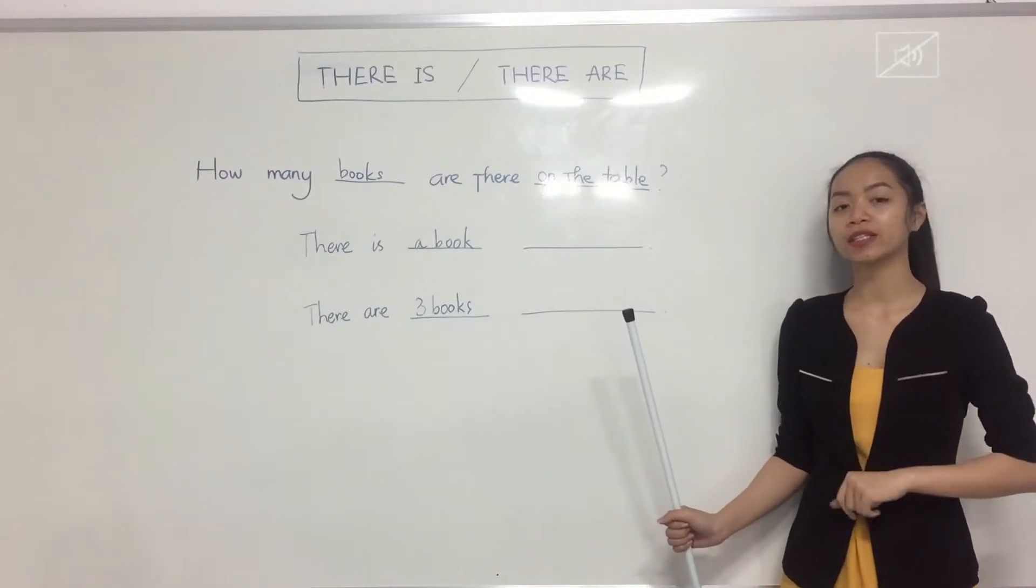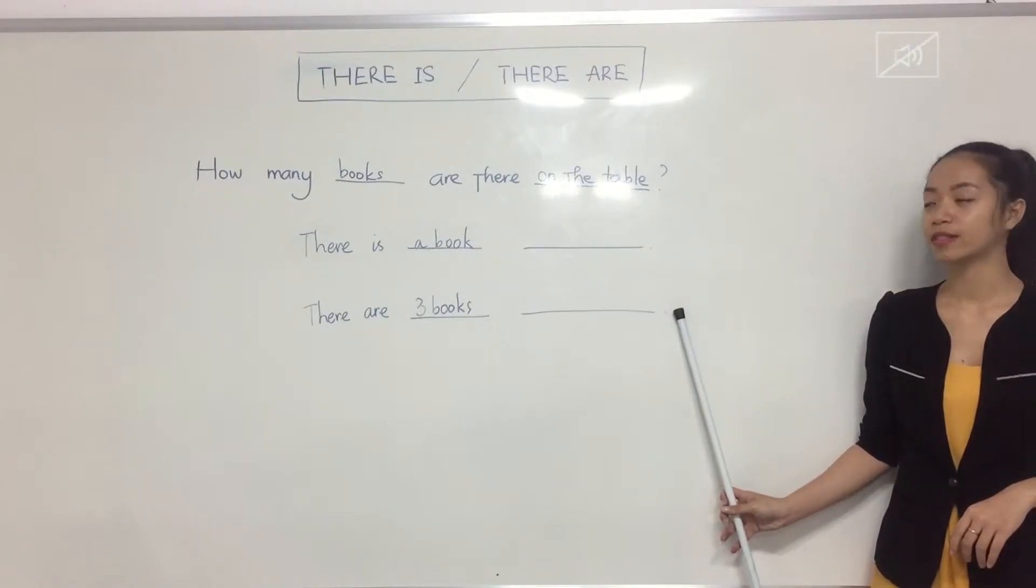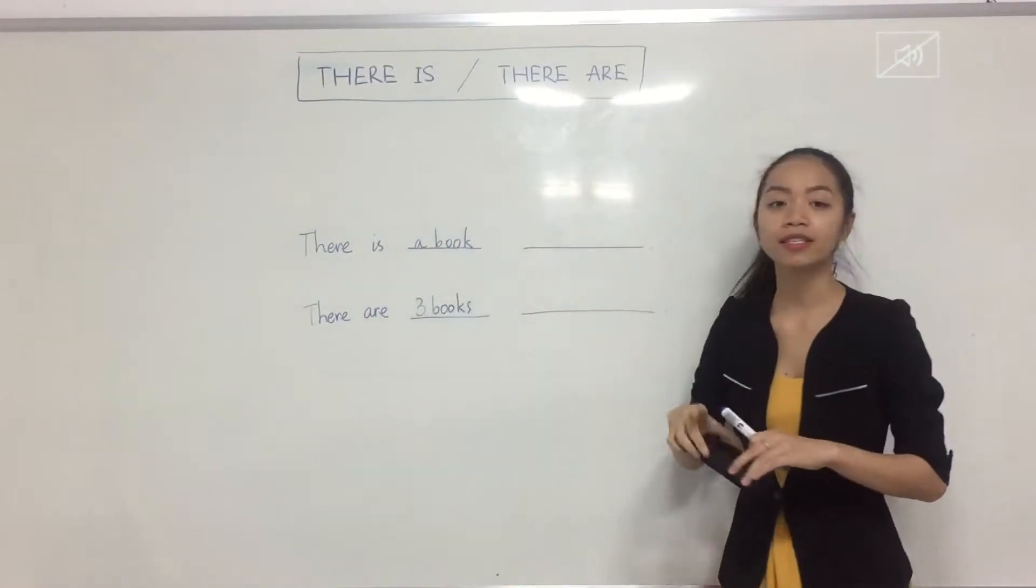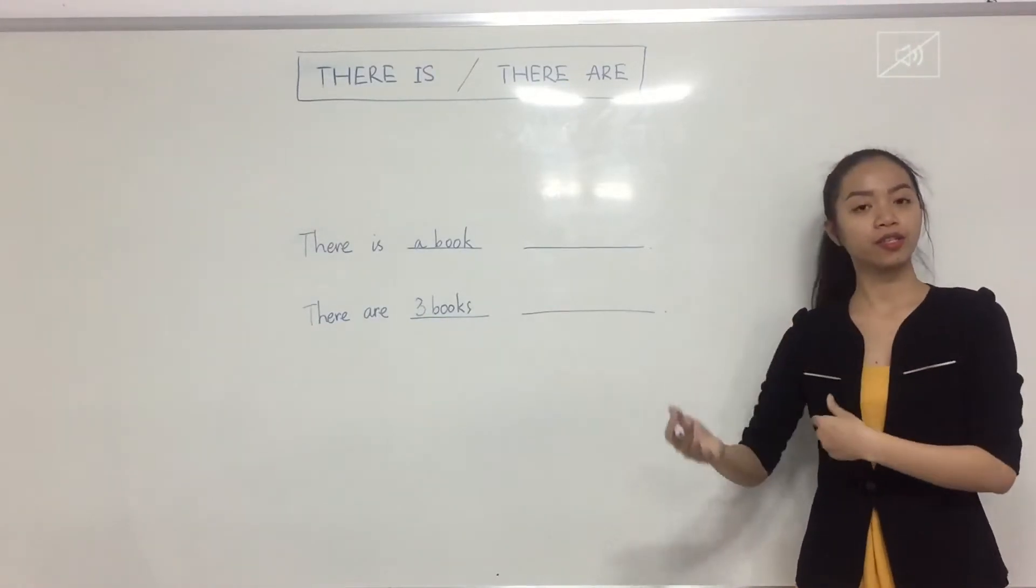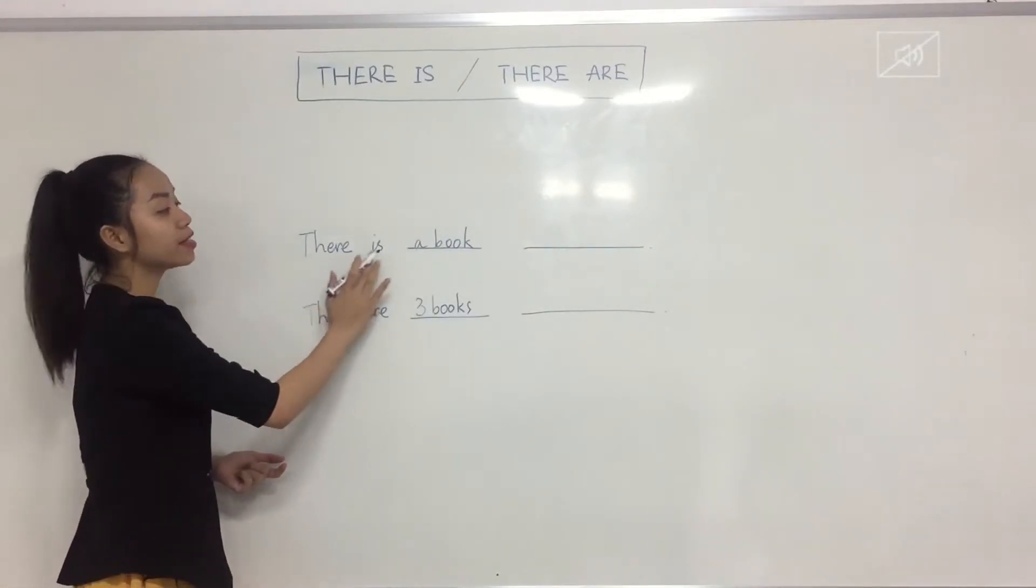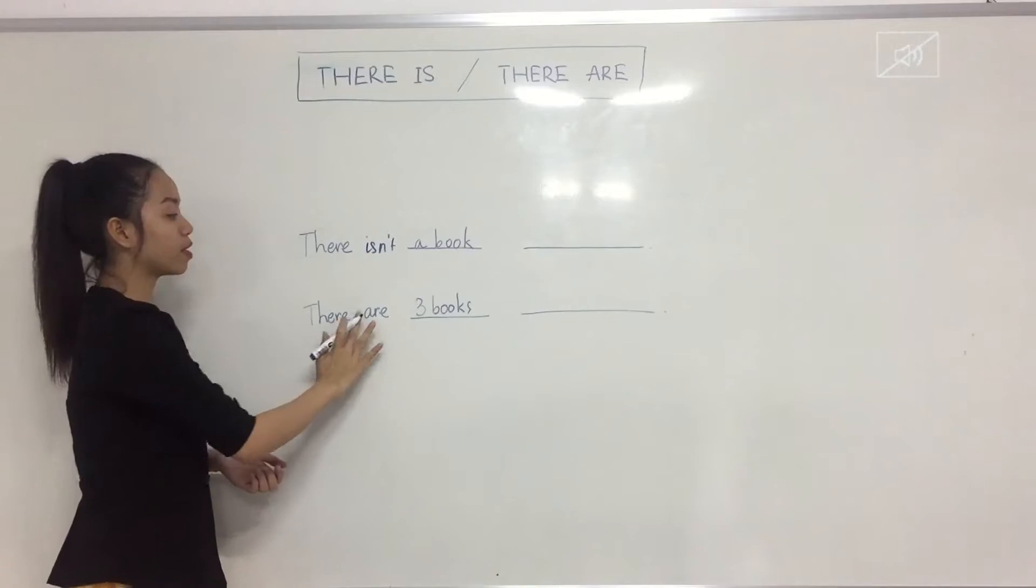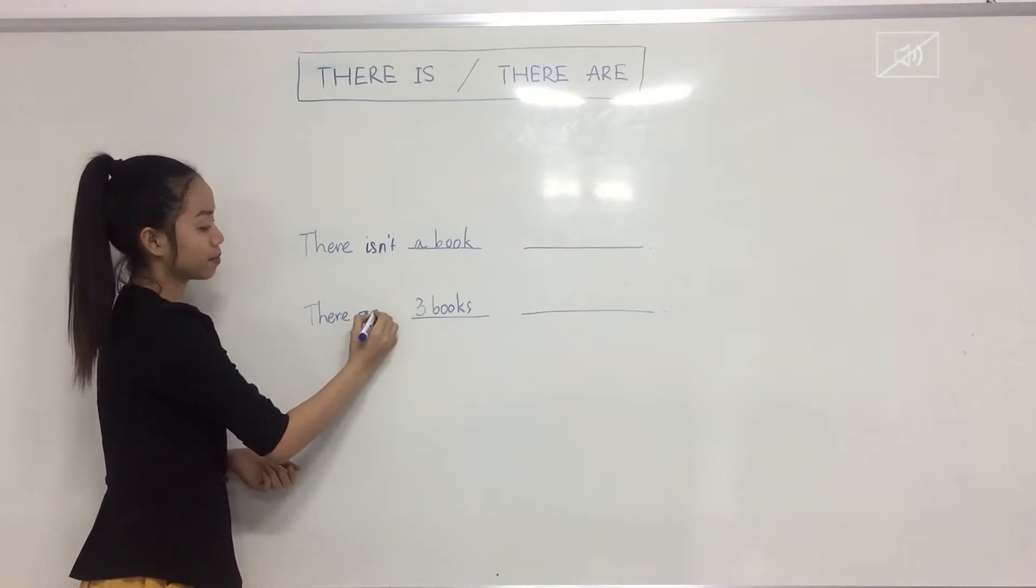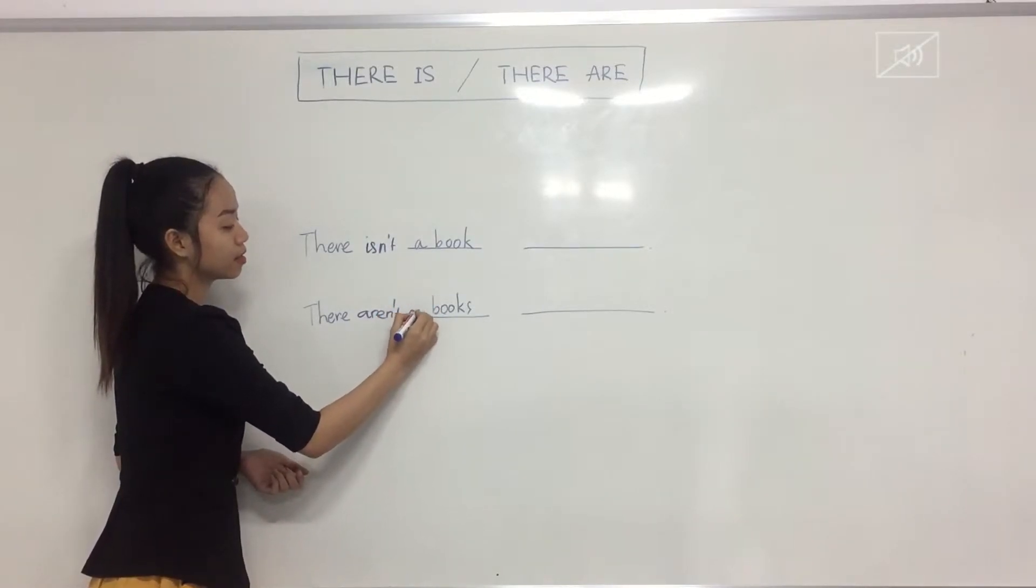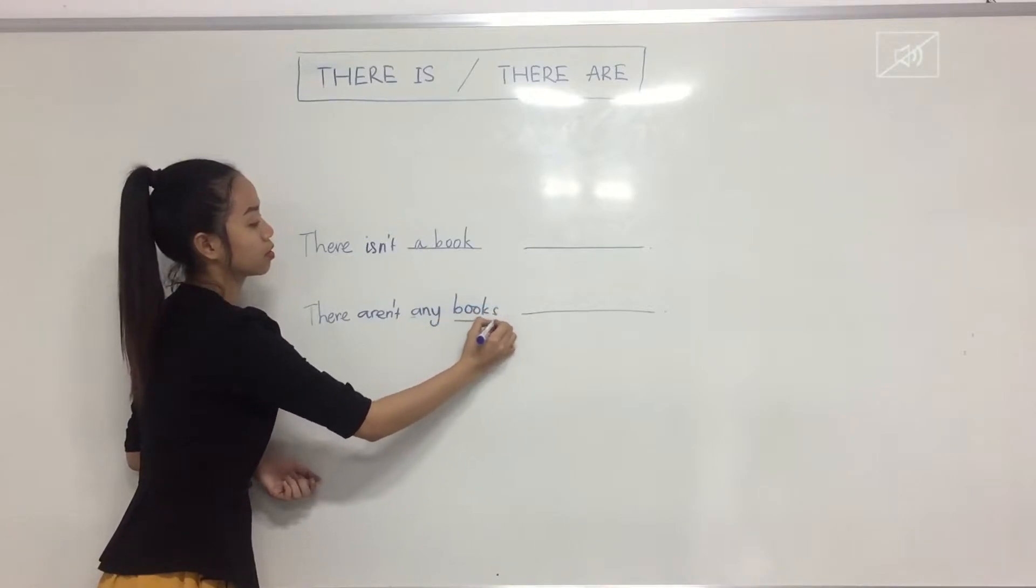So, now I'm going to ask and can you ask a question? How many books are there on the table? This is a statement. So how can you change it into negative form? Just not after is or are. So there is a book on the table, you can say there isn't a book on the table or there aren't and we put any, any books.